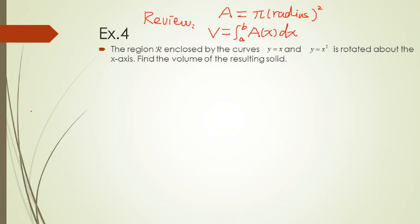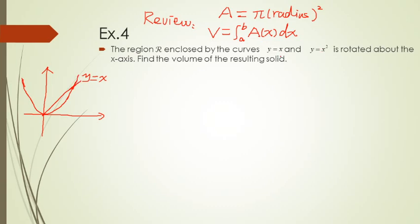First we should draw the function curves: y equals x, which is a straight line, and the parabola y equals x squared. The intersection of those two curves will be at (0, 0) and (1, 1) — two intersection points at the origin and at (1, 1).